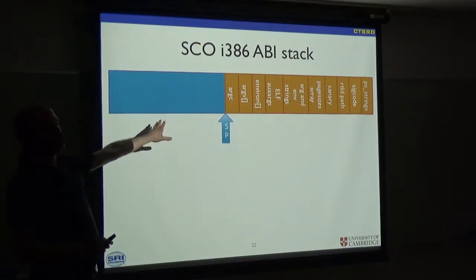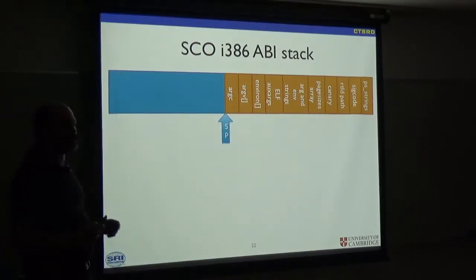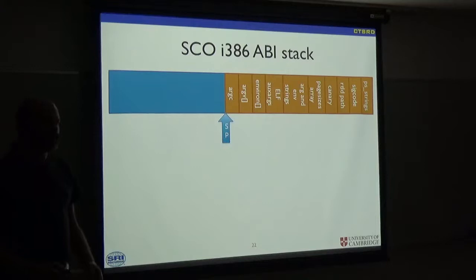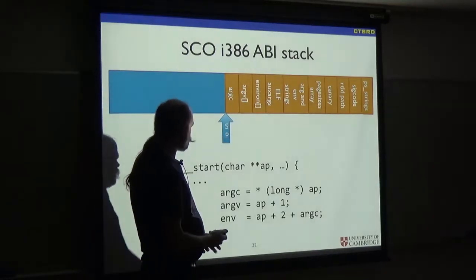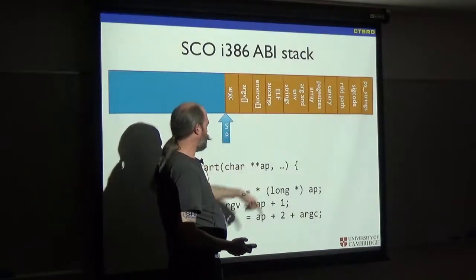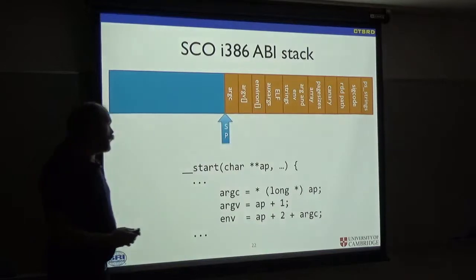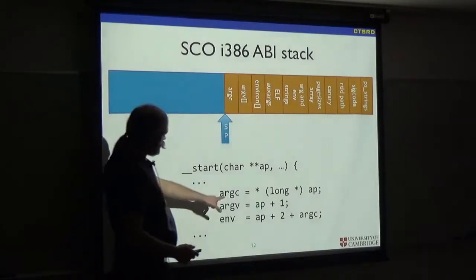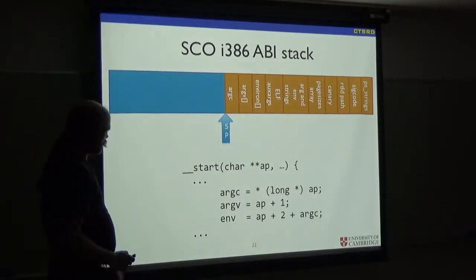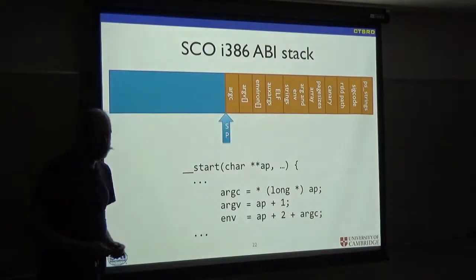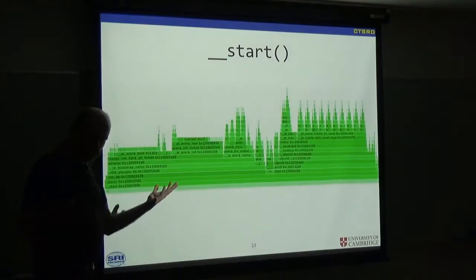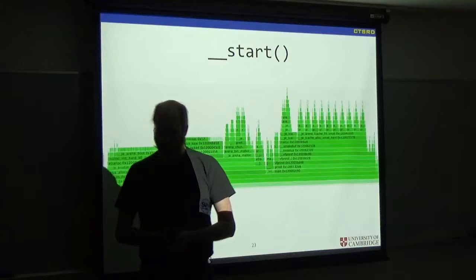Argc is a little bit of an oddball. C programs typically take two arguments: argc, which is an integer, a number of arguments, and an argument array. Interestingly, argc is always a long, not an int, because it ensures stack alignment is correct. In the actual program, underscore start is called with this ABI pointer, which also happens to be the stack pointer. And that's used through this awful, slightly invalid C to find argc, argv, and the end of the environment.